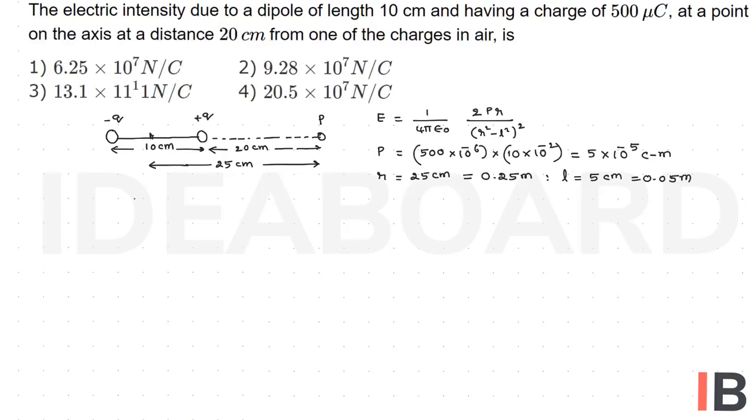After substituting, E is equal to 9 into 10 power 9, 1 by 4 pi epsilon not value, 2 into p value 5 into 10 power minus 5 into r value 0.25.